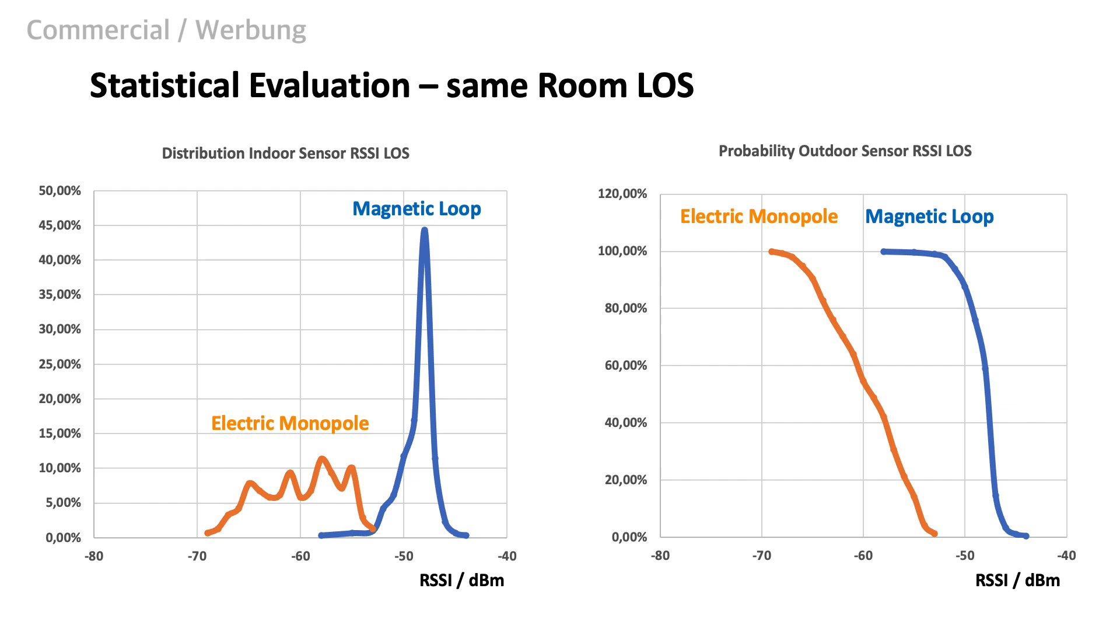In our second scenario, we have line of sight between transmitter and receiver. As expected, we find a dominant direct signal that causes a smaller variation of the signal. In the case of the magnetic antenna, we can see that the peak is getting even higher than before. In the case of the electric monopole, we also see less signal variation.